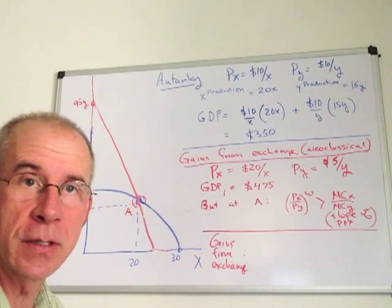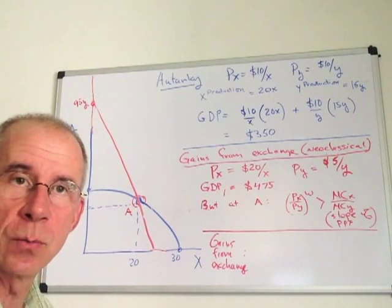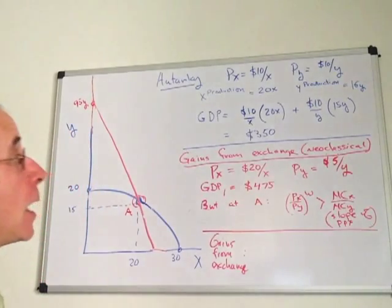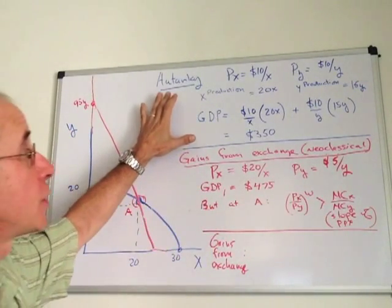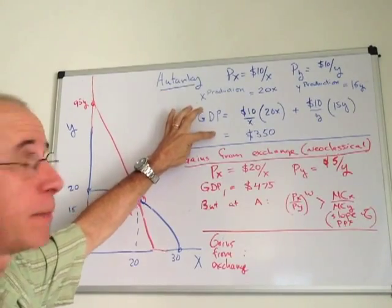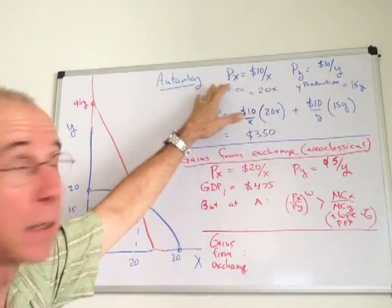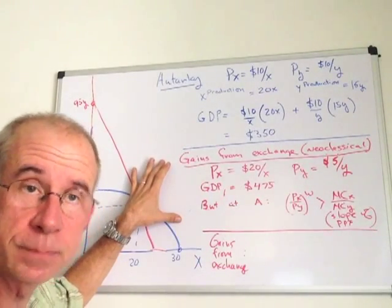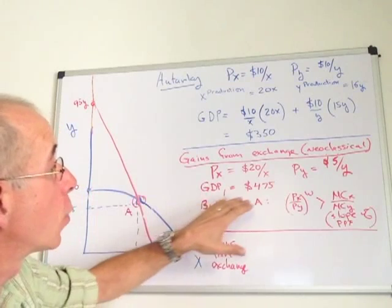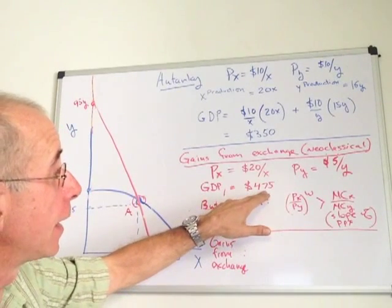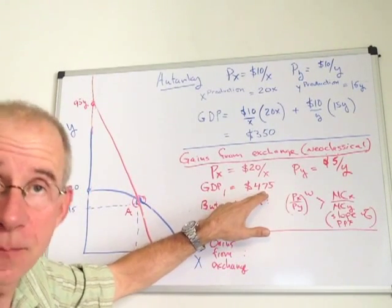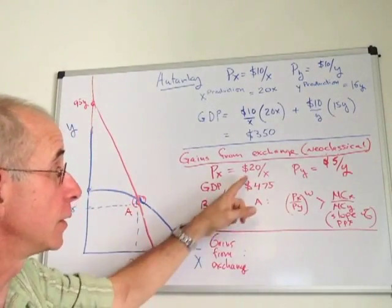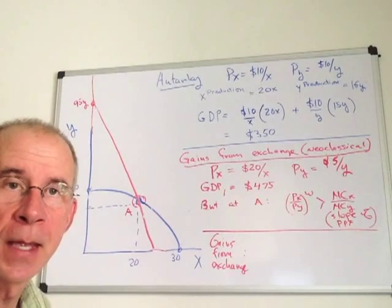There's a strong incentive to change the combination of goods that you produce if there are new international prices. Just recall that we have a situation in autarky where GDP was $350 at these prices. We had gains from exchange with fixed levels of production, but the new prices where we ended up having a GDP of $475 with the given production and these new prices.